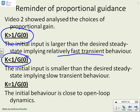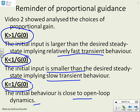If kp is less than 1 over g of 0, the initial input is smaller than the desired steady state, and that implies slow transient behavior. Obviously, what's in the middle? If k equals 1 over g of 0, the initial behavior is close to open-loop dynamics.